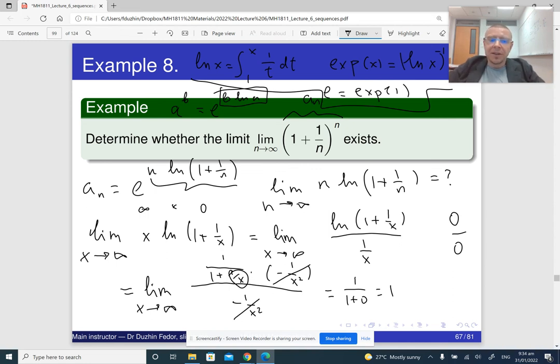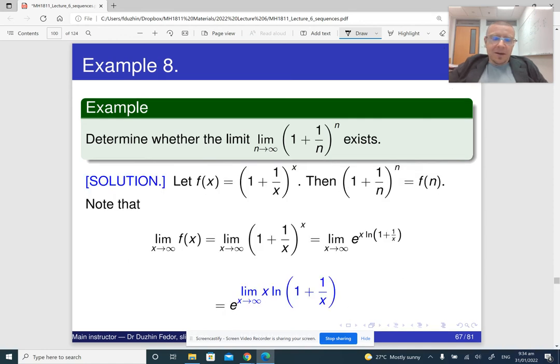Okay, but remember that the original limit was e raised to that power, so which means that the answer to the original limit is really e raised to this power, e to the 1, which is e. All right, so this is how we can derive this classical limit found in 17th century by Jacob Bernoulli.